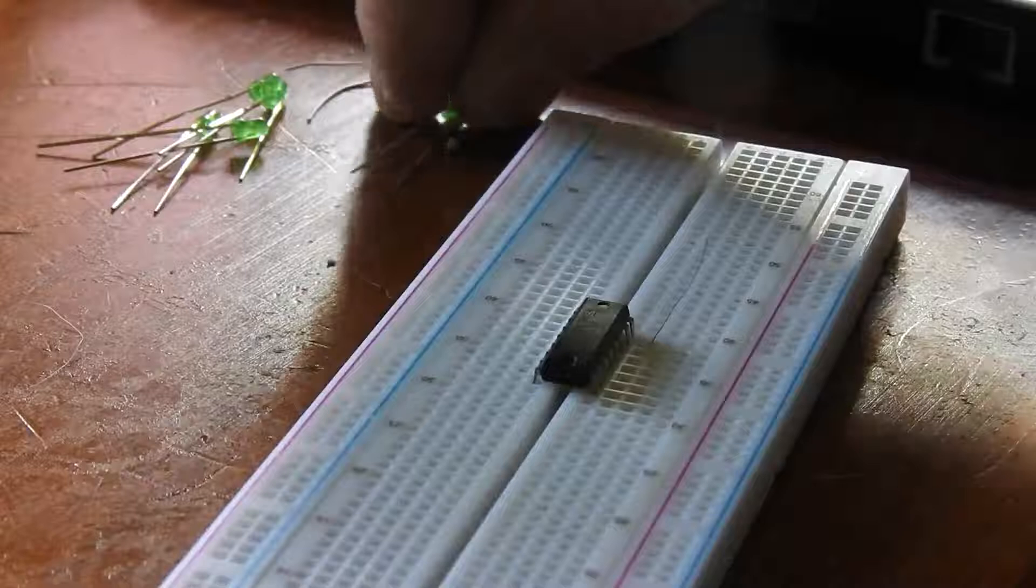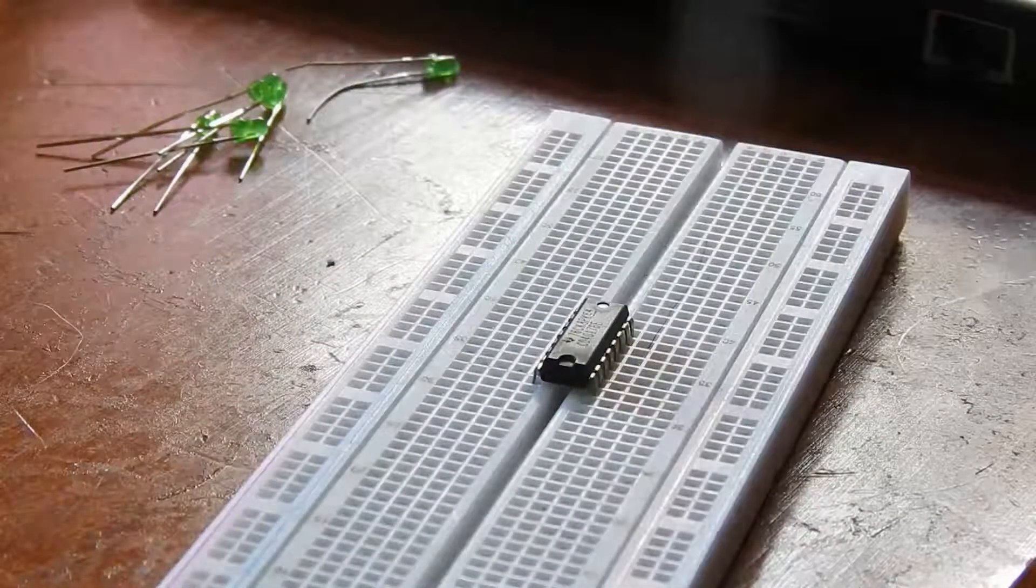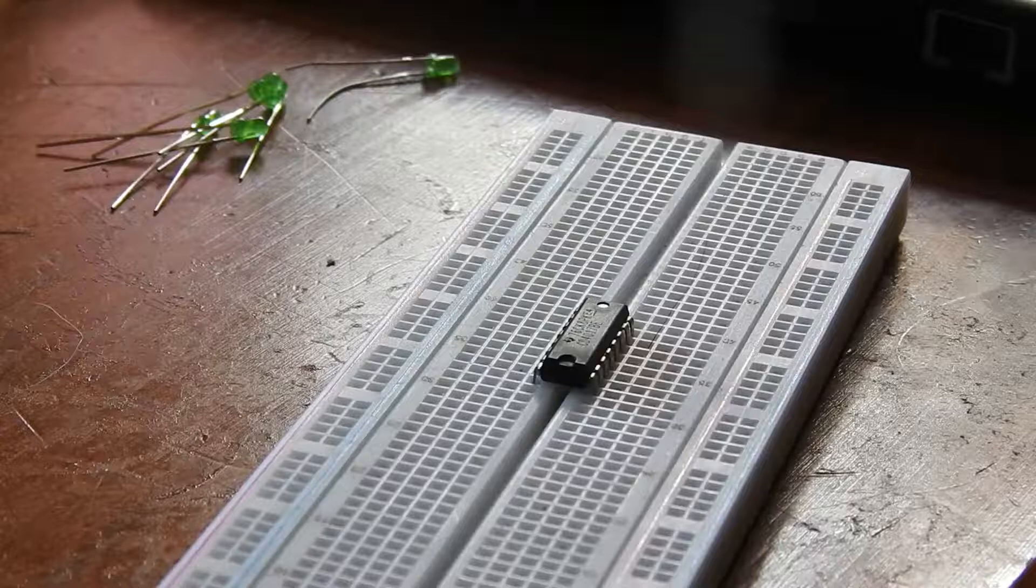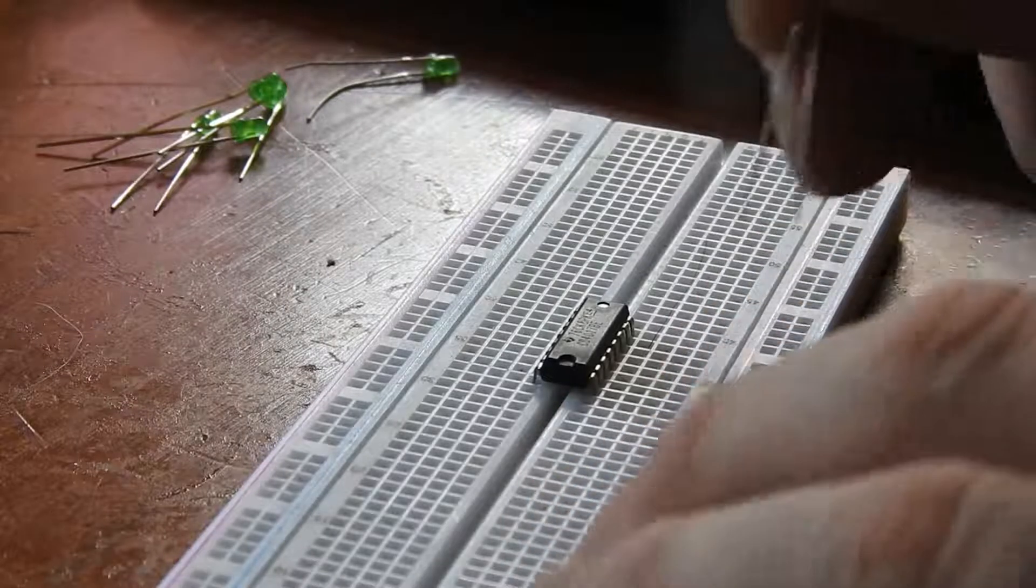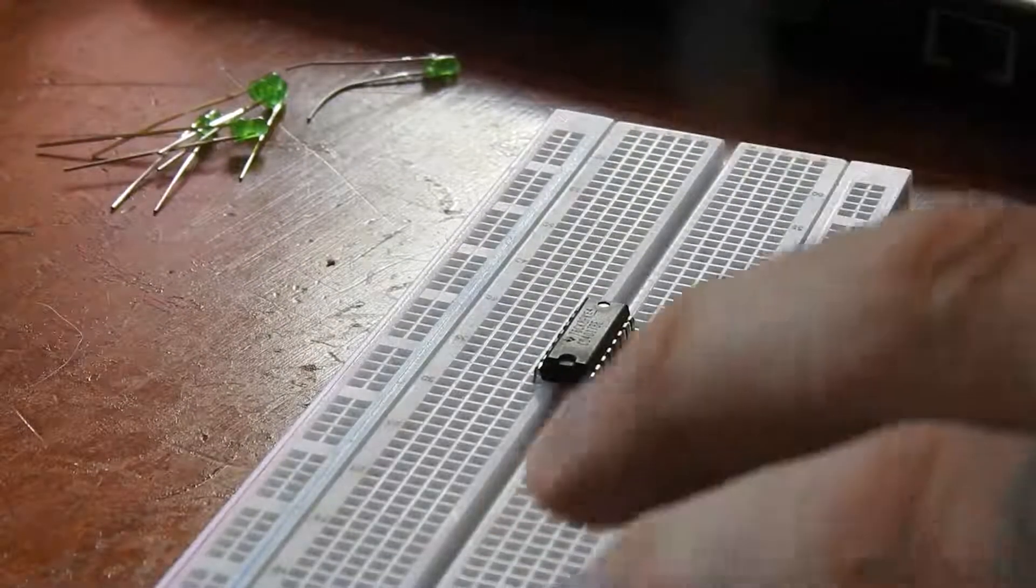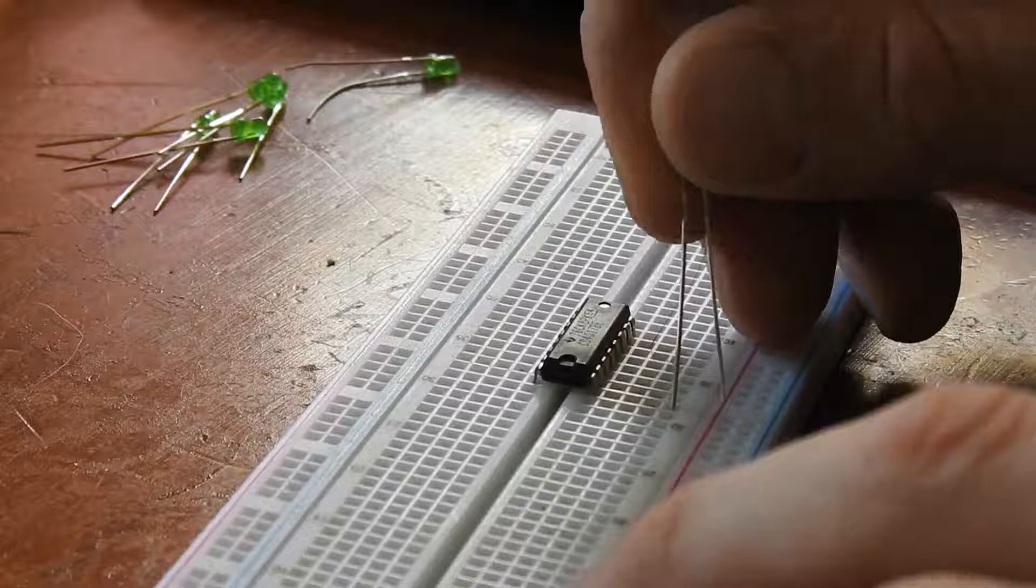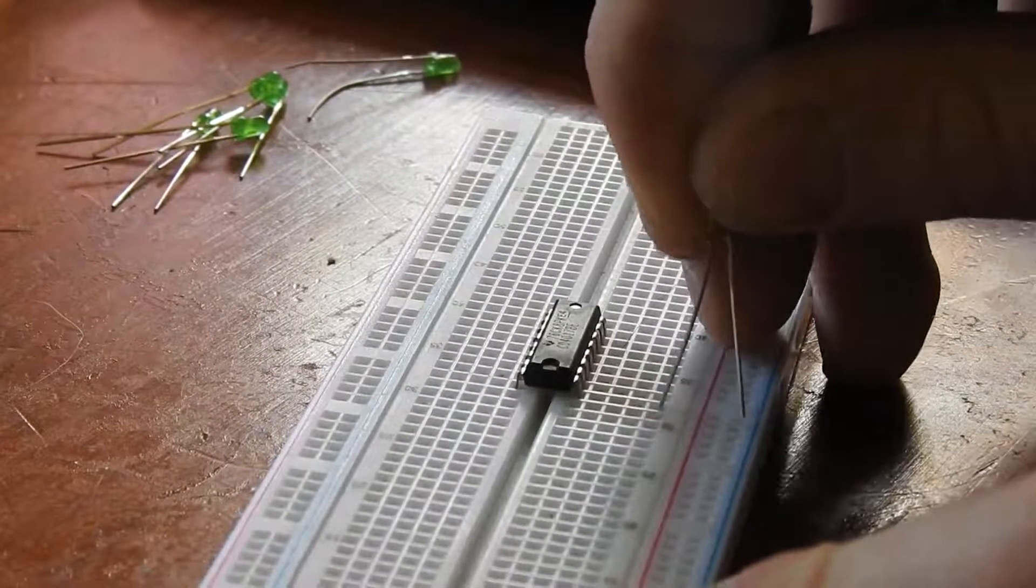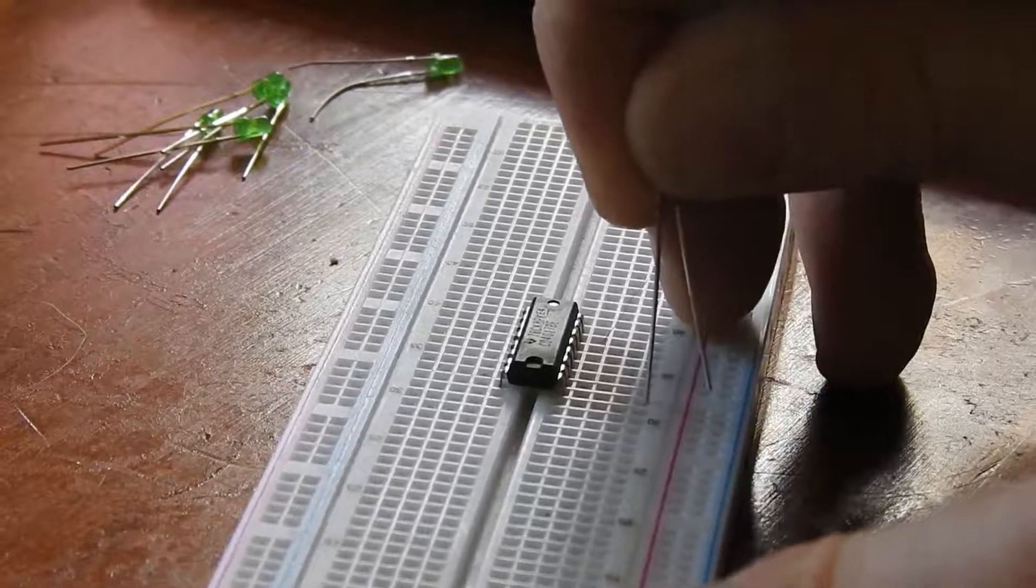The first thing we're going to do is put these LEDs in. We're going to connect them to pin 1, 2, 3, 4, 7. Our positive goes to the pin and our negative we're going to put it into the negative row.